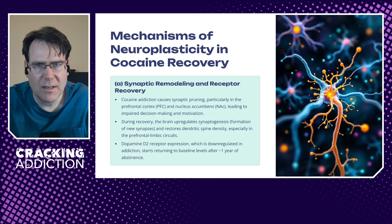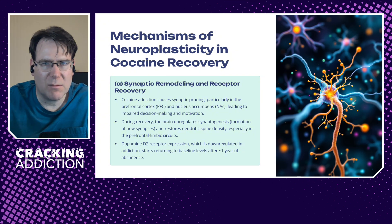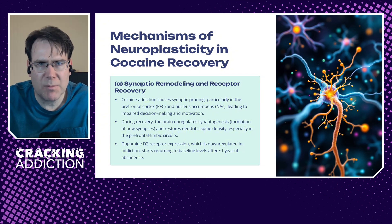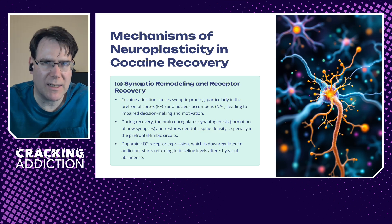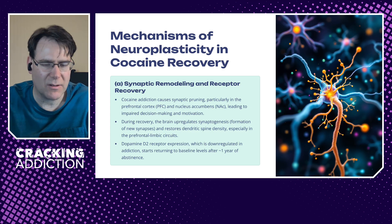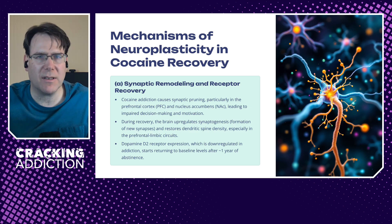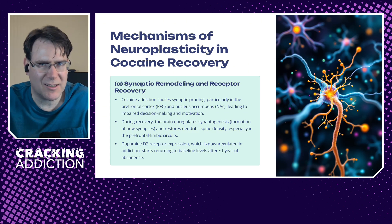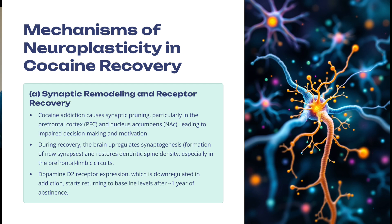Cocaine addiction causes synaptic pruning — the removal of synapses, like pruning branches from a tree — particularly in the prefrontal cortex and the nucleus accumbens, leading to impaired decision-making and motivation. During recovery, the brain up-regulates synaptogenesis — the formation of new synapses — and restores dendritic spine density, especially in the prefrontal limbic circuits. Abstinence also increases dopamine D2 receptor expression, which is down-regulated in addiction, and D2 receptor density starts to return to baseline after at least one year of abstinence.